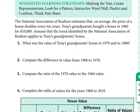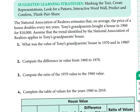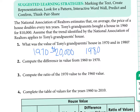Number one asks: what is the value of Tony's grandparents' house in 1970 and 1980? Based on the fact that it doubles every ten years, in 1970 it should be $20,000 because doubling $10,000 gives $20,000. And in 1980 it should be $40,000 because doubling $20,000 gives $40,000.